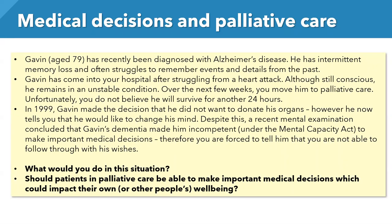We're now going to talk about medical decisions and palliative care with another case study. Gavin, aged 79, has recently been diagnosed with Alzheimer's disease. He has intermittent memory loss and often struggles to remember events and details from the past. Gavin has come into your hospital after suffering a heart attack. Although still conscious, he remains in an unstable condition. Over the next few weeks you move him to palliative care — unfortunately you do not believe he will survive for another 24 hours. In 1999 Gavin made the decision that he did not want to donate his organs. However, he now tells you that he would like to change his mind. Despite this, a recent mental examination concluded that Gavin's dementia made him incompetent under the Mental Capacity Act to make important medical decisions, and therefore you are forced to tell him that you are not able to follow through with his wishes.